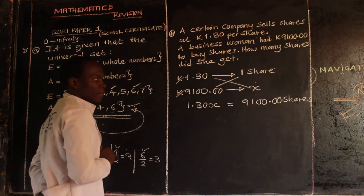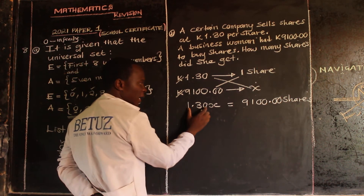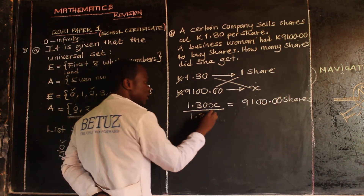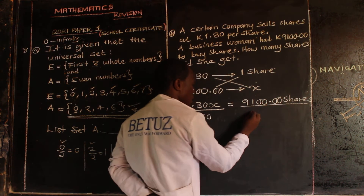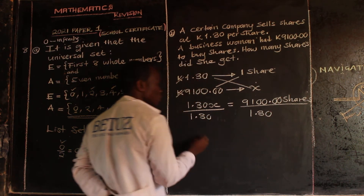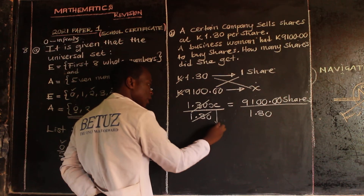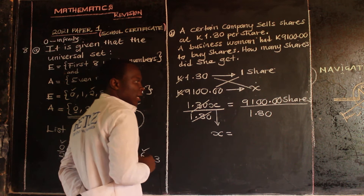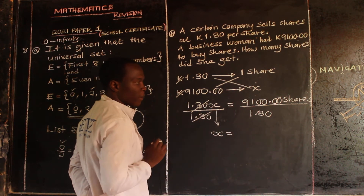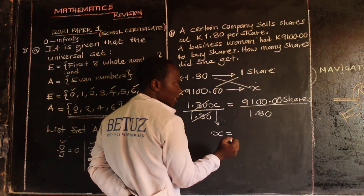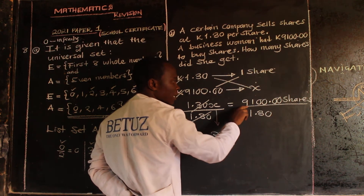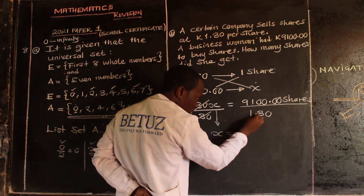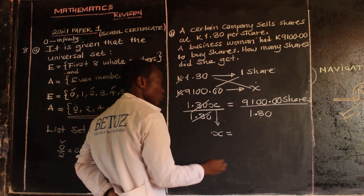To remain with x, we divide both sides by the coefficient of x, which is 1.30. So x equals 9,100 divided by 1.30. Since calculators are not allowed in mathematics paper one, dividing by a decimal is a challenge, so we need to eliminate the decimal.